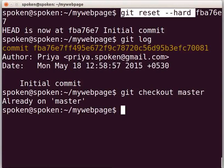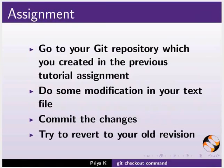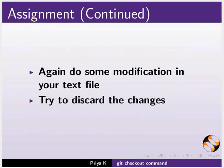With this, we come to the end of this tutorial. Let us summarize. In this tutorial, we have learned how to add multiple files to a git repository, remove a file from a git repository, restore the removed file, discard the changes made to a file, and revert to an earlier revision. As an assignment, go to your git repository from the previous tutorial, do some modifications in your text file, commit the changes, try to revert to your old revision, do some more modifications, and try to discard the changes.